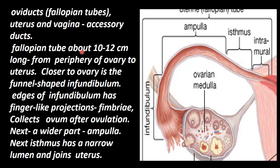The fallopian tube is about 10 to 12 centimeters in length, from the periphery of the ovary to the uterus. Closer to the ovary, there is a funnel-like structure that collects the ovum released from the ovary. This funnel-like structure is called the infundibulum.